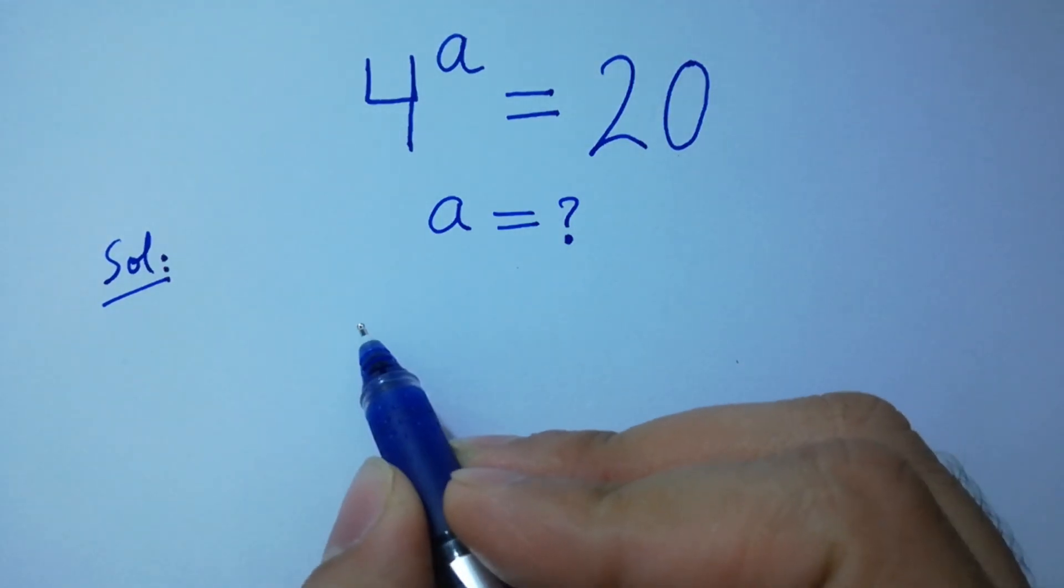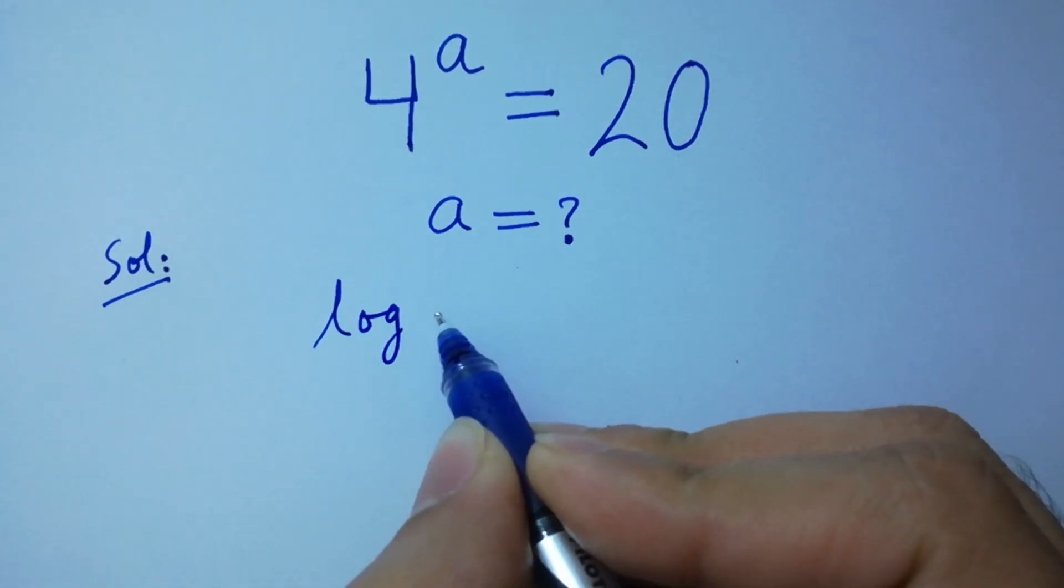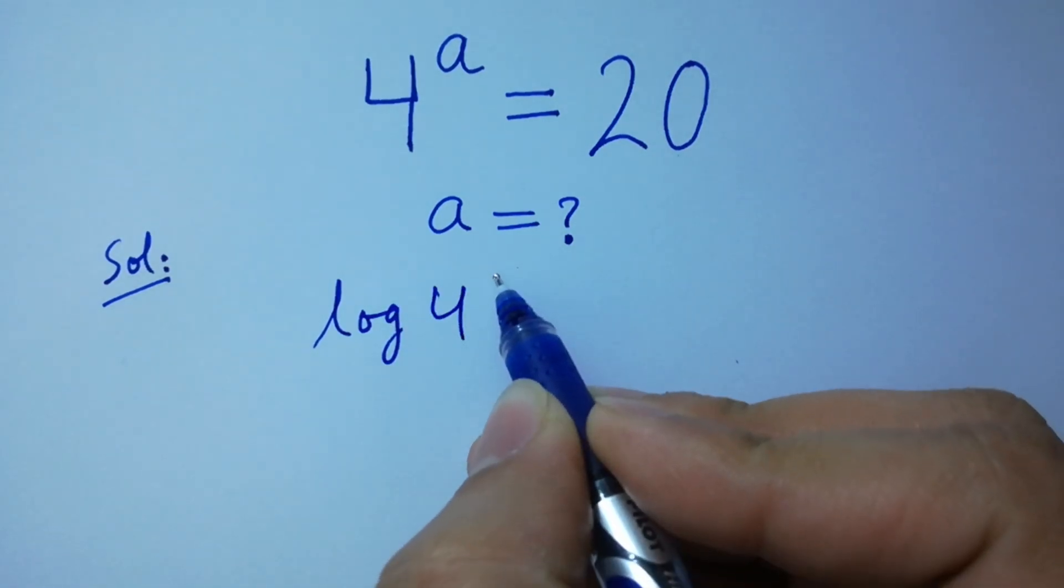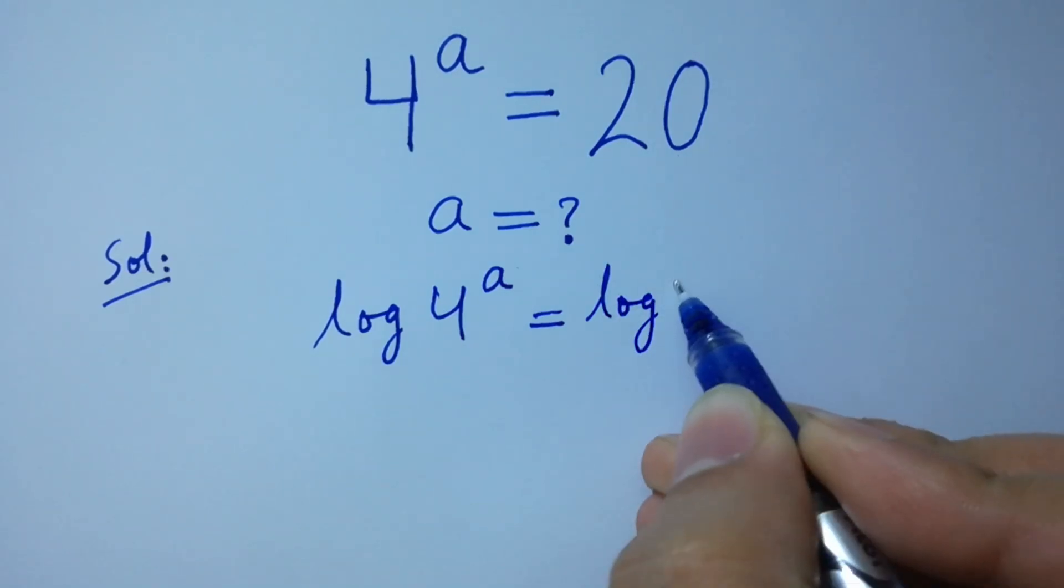Take log on both sides. Log 4 to the power a equals log 20.